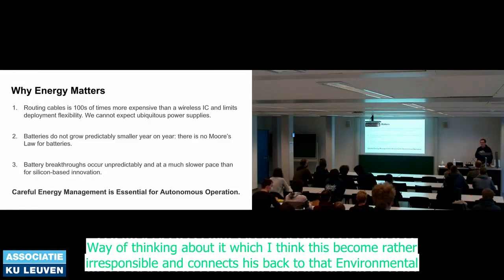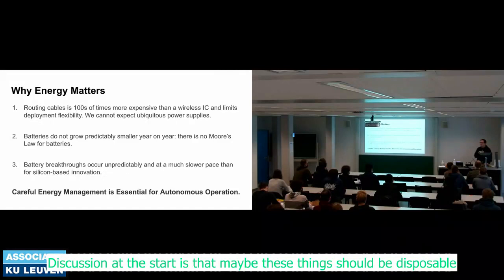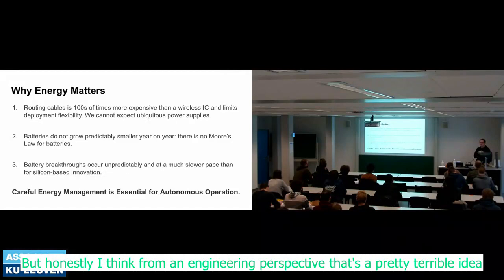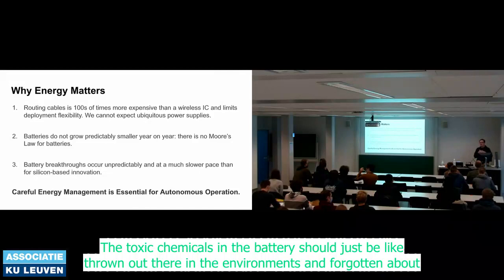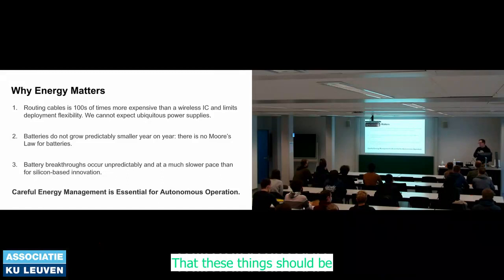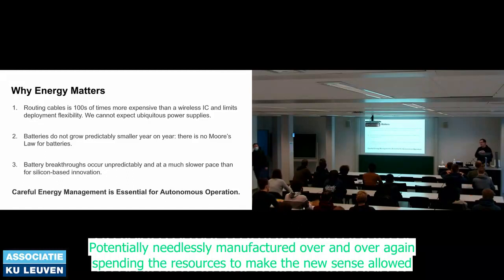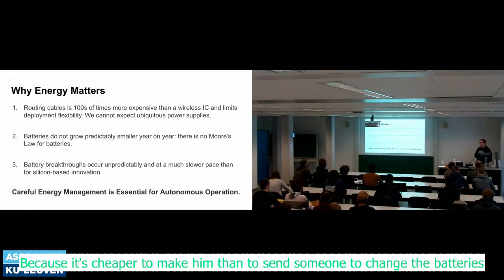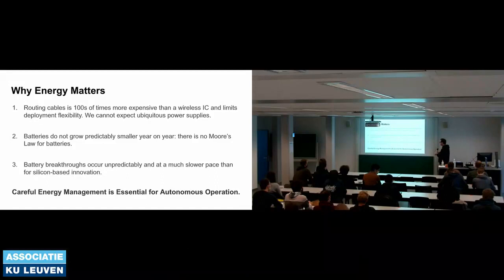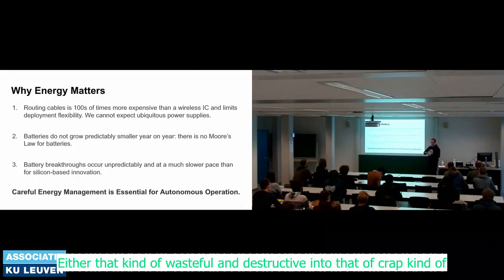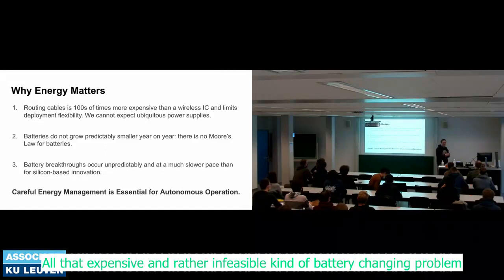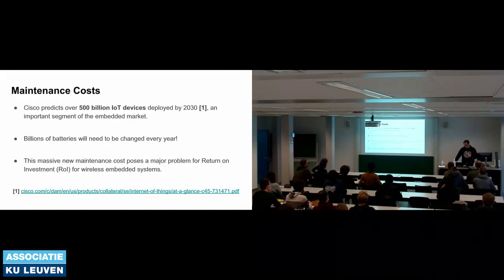A second approach — making devices disposable — is rather irresponsible. The toxic chemicals in batteries would just be thrown into the environment, and devices would be needlessly manufactured over and over again because it's cheaper to make a new sensor node than send someone to change batteries. If you want to avoid that wasteful 'internet of crap' vision or the expensive battery-changing problem, you really need to be good with energy.